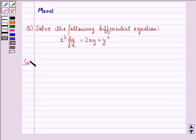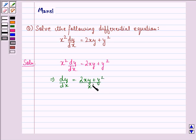So let us see the solution to this question. Here we are given x²(dy/dx) = 2xy + y². This implies dy/dx = (2xy + y²)/x².